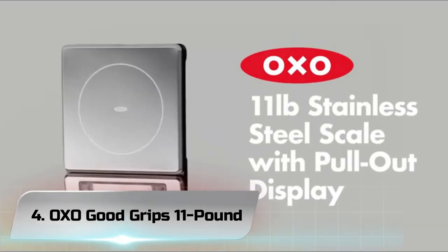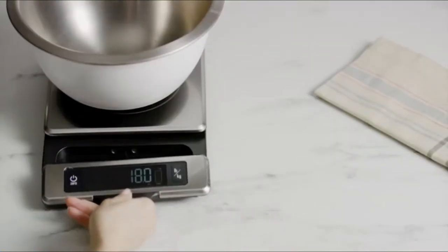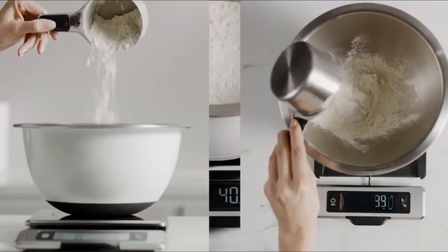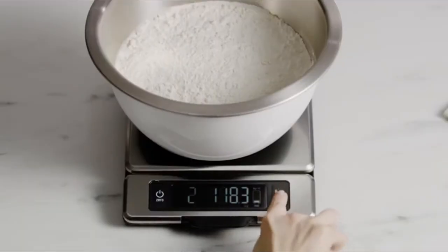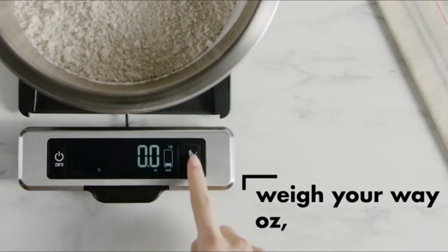Number 4. OXO Good Grips 11 Pound. We have already written many equipment reviews, but we have been missing out on one of the most important pieces of kitchen equipment you can have. We're talking about kitchen scales, a piece of equipment built with consistency in mind.